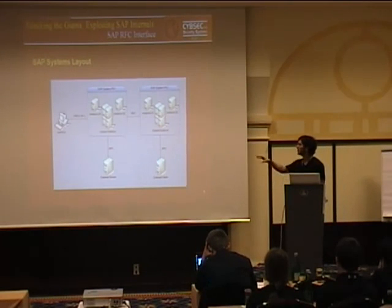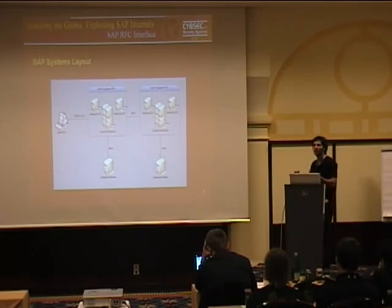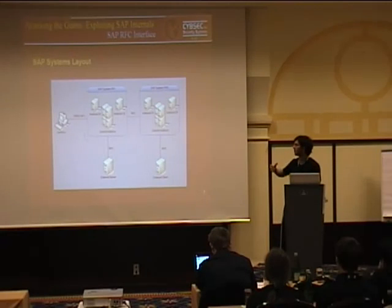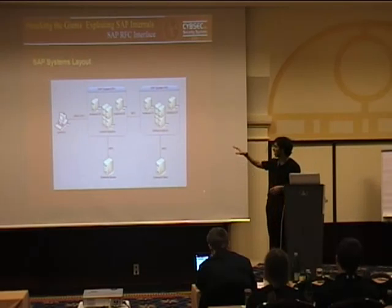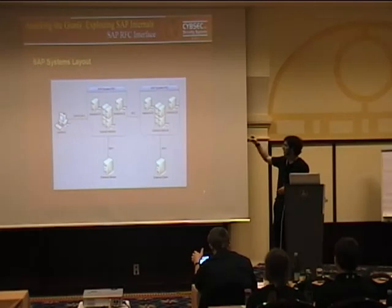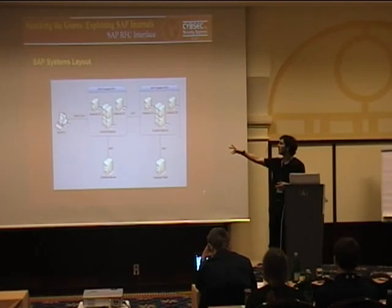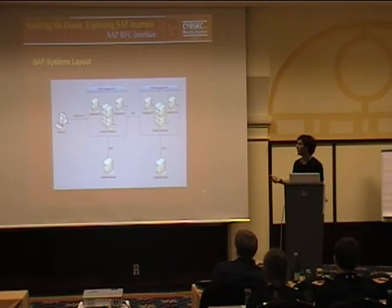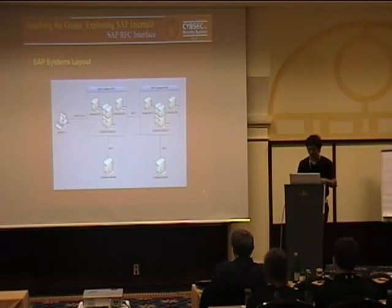You may have different systems — within the same company or with other providers, suppliers, or clients. You'll have a system with a central instance running the core services, and you may have different dialogue instances to provide more service to users. Connections between different systems are done through RFC. The connection with end users running SAP GUI — the graphical interface to access SAP — is mainly done by a dialogue protocol, but some parts can also be done through RFC. Communication with external systems, whether SAP-related or not, is also done using this protocol. RFC is used everywhere in SAP implementations.